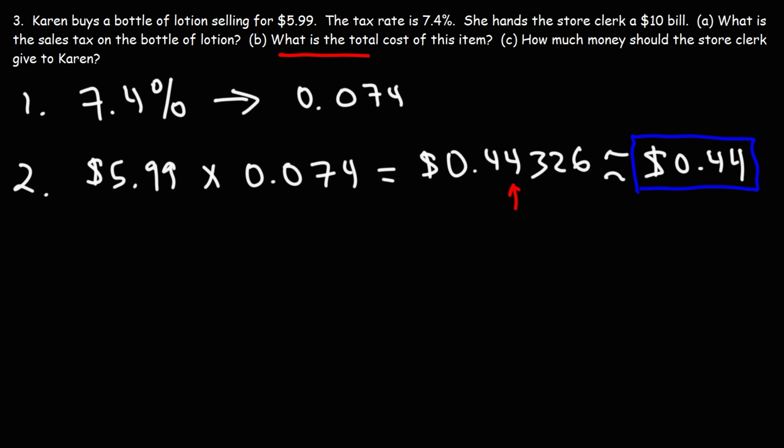Now, let's move on to part B. What is the total cost of this item? To find that, we need to add the price of the lotion and the sales tax. So we have $5.99 plus 44 cents. 9 plus 4 is 13. We'll write the 3, carry the 1. 1 plus 9 is 10 plus 4, that's 14. We'll carry the 1 again. 5 and 1 is 6. So we get $6.43. So that is the total cost of the item.